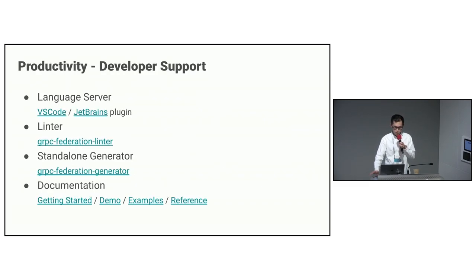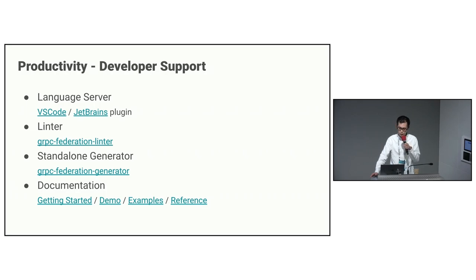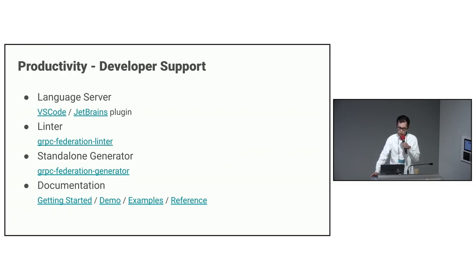We also provide various tools and documentation to improve developer productivity. We have created a language server to help developers write the DSL, and it can be used with VS Code and the JetBrains plugin if desired. We also offer a linter and a standalone generator for quick use of zRPC Federation, as well as detailed demo documentation to showcase real-world use cases along with API references.